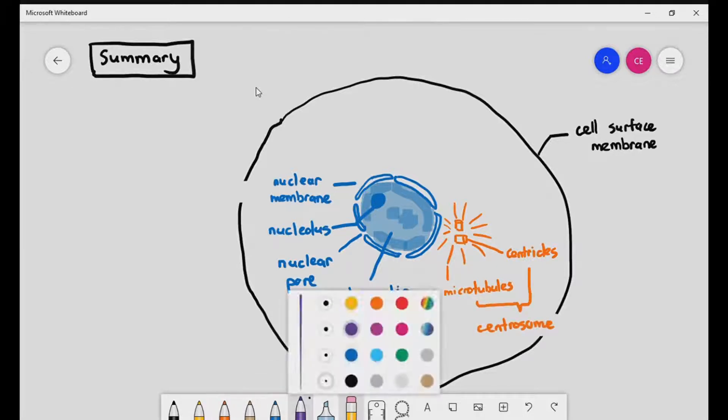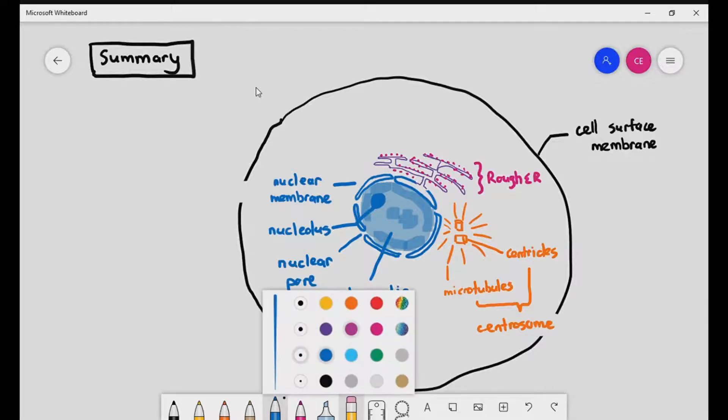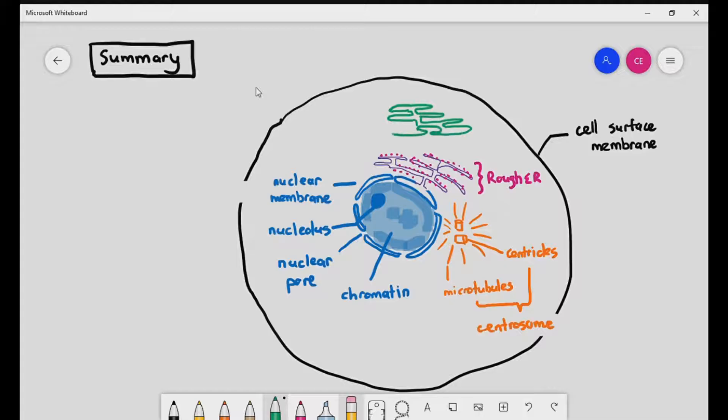The next thing that we have is a single membrane network-like structure with studs on its surface. And that is the rough ER. The studs or dots on the surface represent the attached ribosomes. We also have another structure that looks like the rough ER, but it is devoid of the ribosomes. And that is the smooth endoplasmic reticulum.